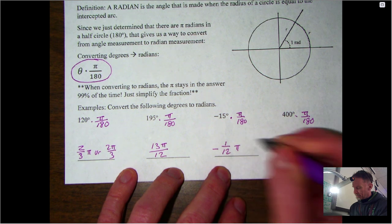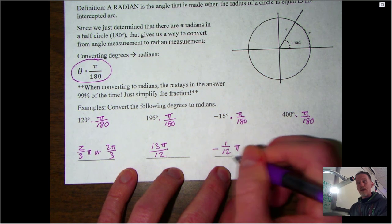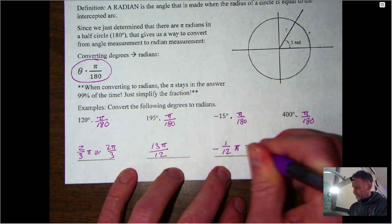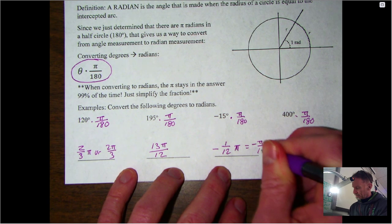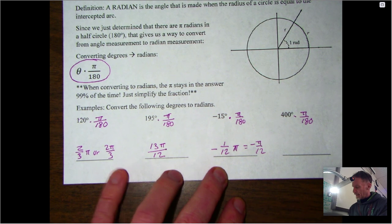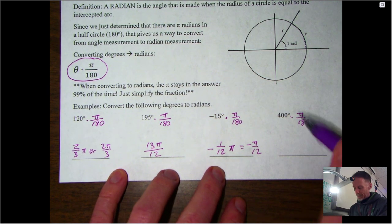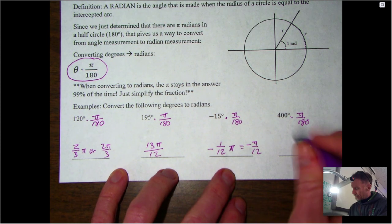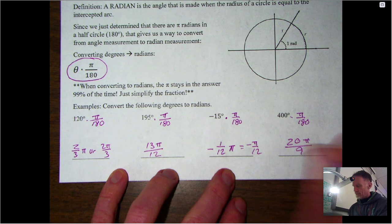And then 400 over 180—that's taking an extra lap around the circle, but that's okay—that's going to come out to be 20π over 9 for the radians. So converting degrees to radians: multiply by π over 180, simplify the fraction, leave the π in the answer.